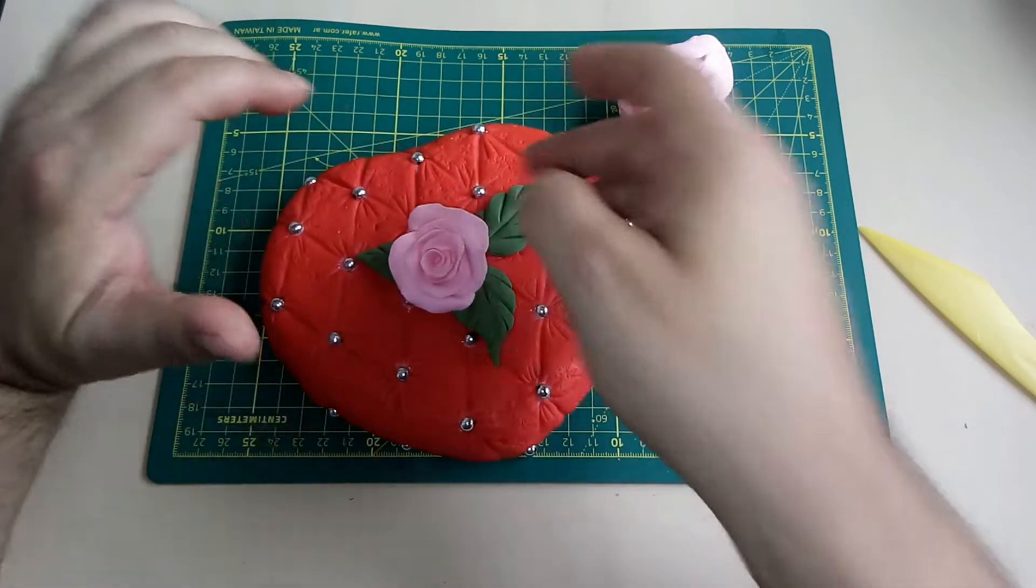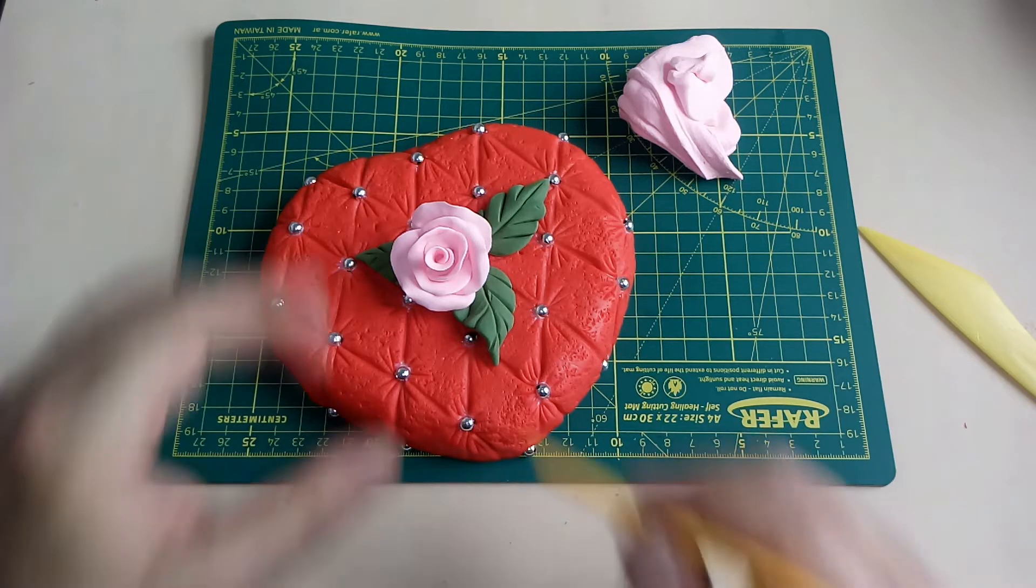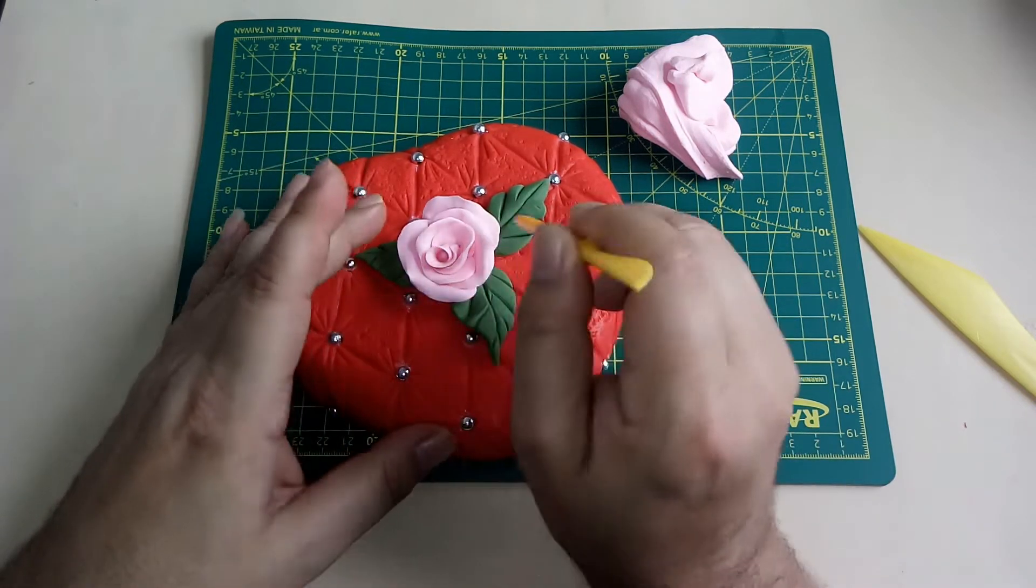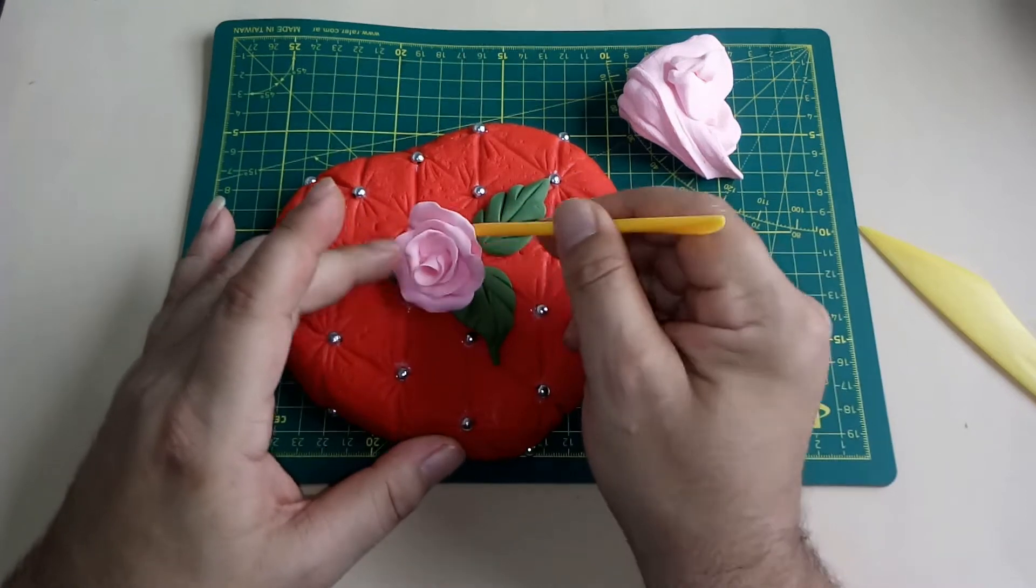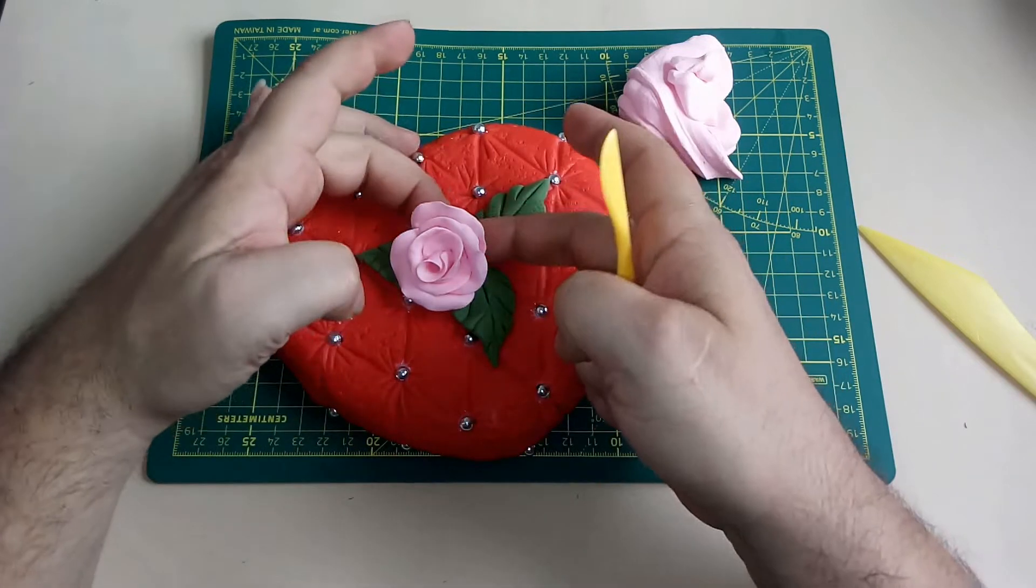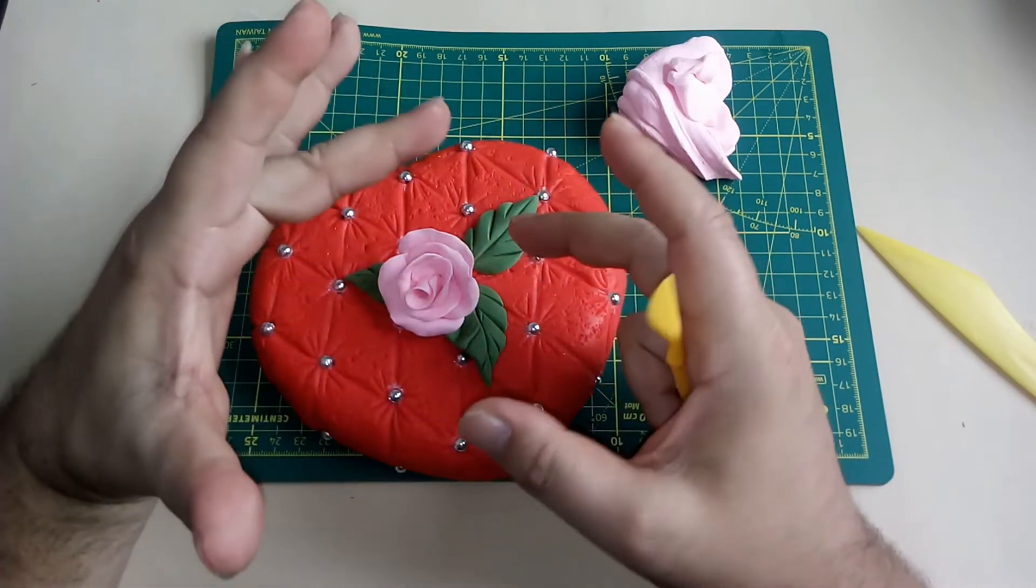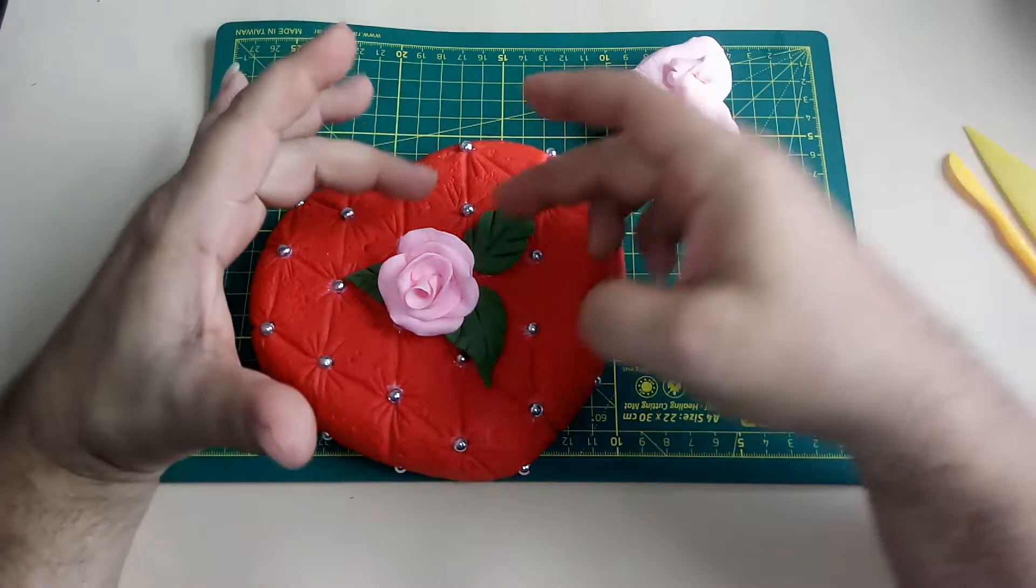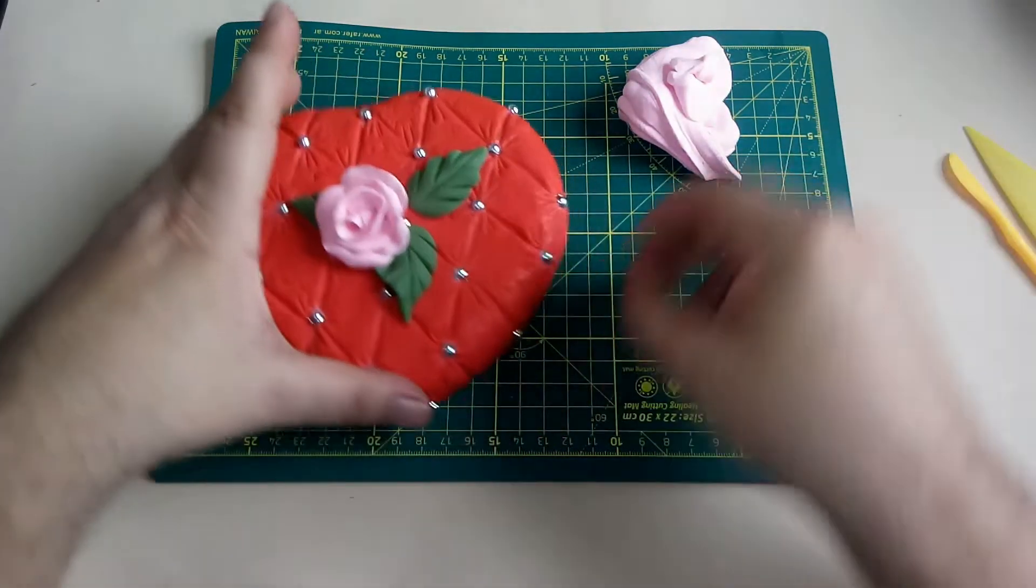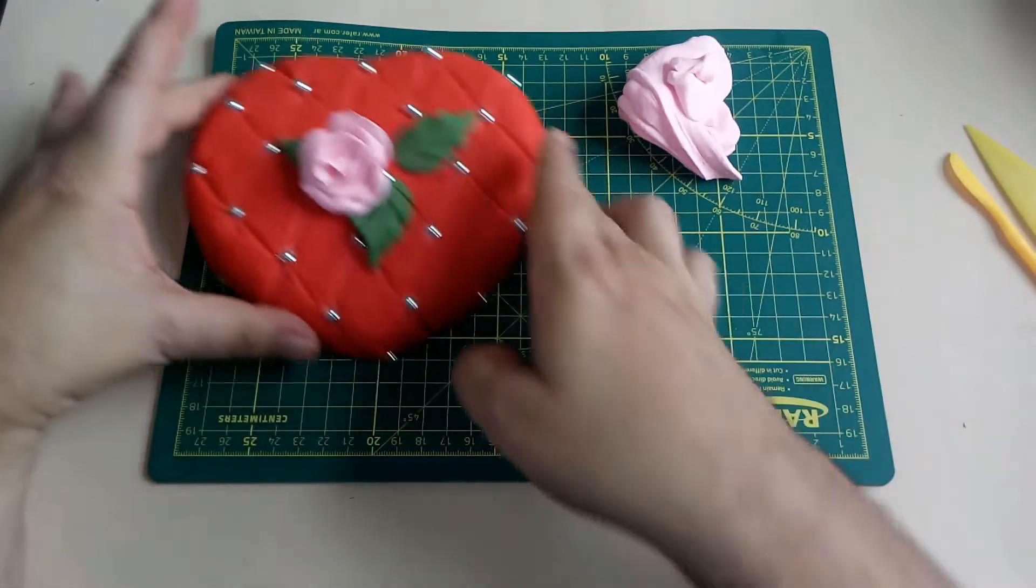Y nuestra flor la voy a pegar en este sector, la voy a ayudar con una esteca, voy a presionar. La porcelana está fresca, hay cola vinílica, eso es lo que va a hacer que esta masa, que es un poco más elástica, quede agarrada. Voy a hacer dos flores más para completar.